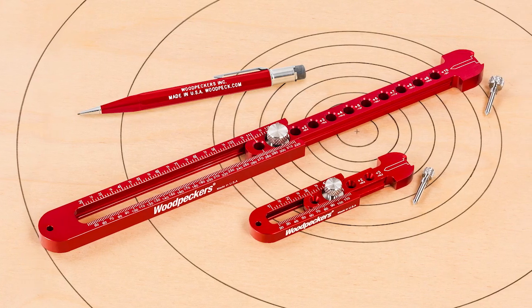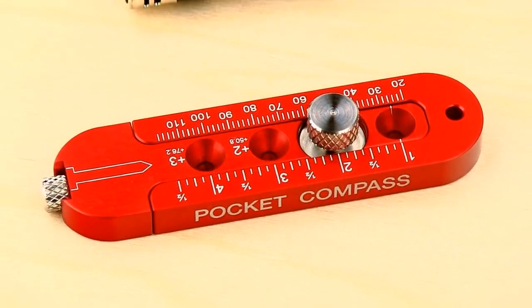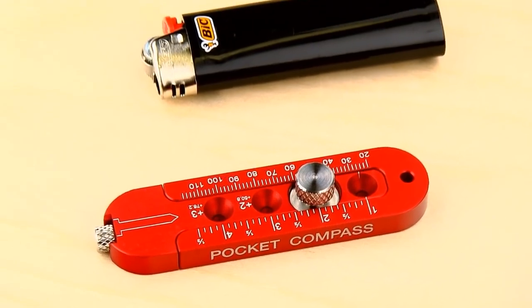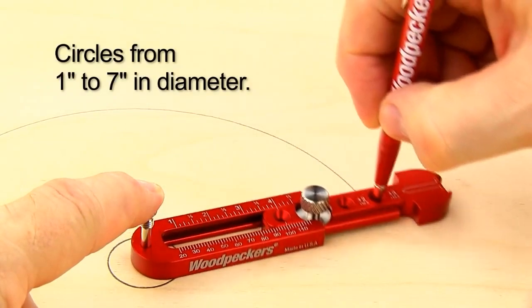We make our quality pocket compass in two sizes for drawing a wide range of circle diameters. The original pocket compass is compact, about the size of a disposable lighter. It can strike circles from one inch to seven inches in diameter.